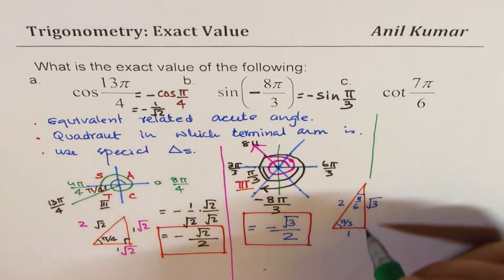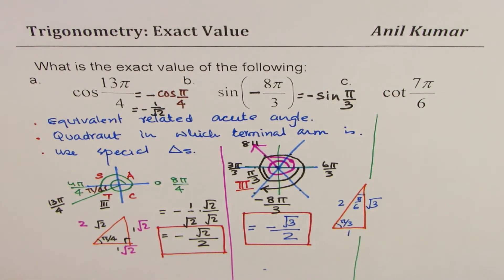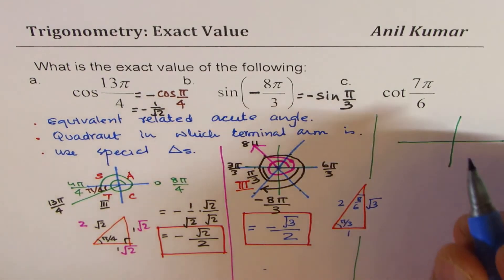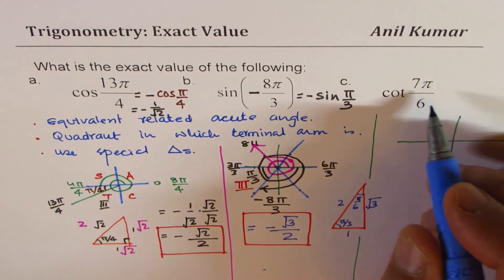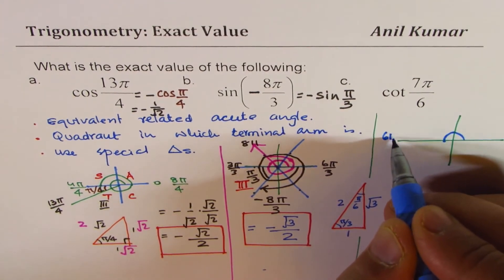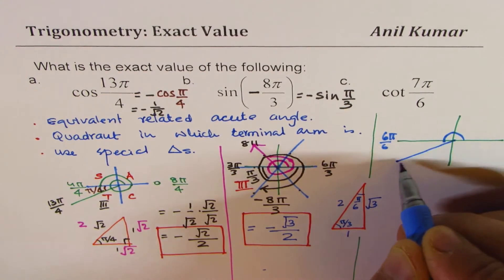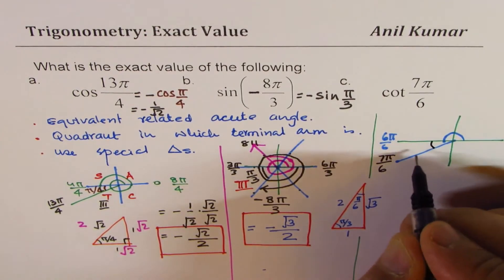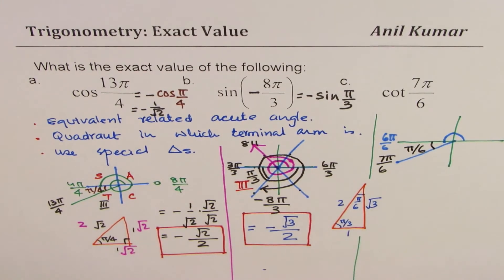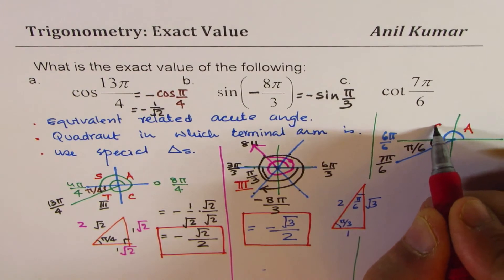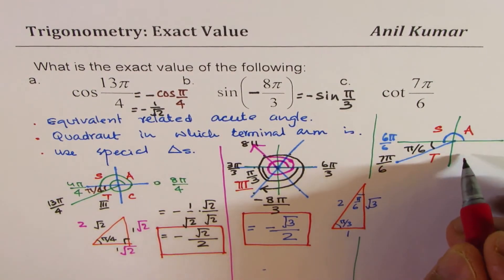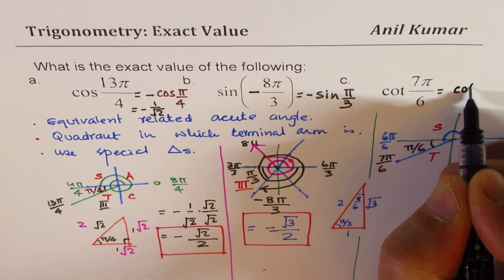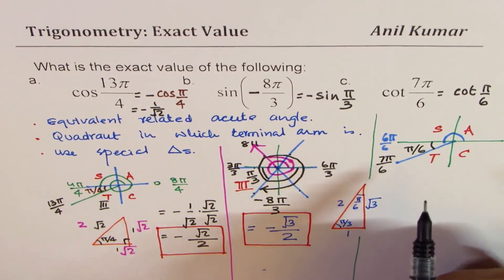The third example is cot(7π/6). Dividing the circle into sixths: 6π/6 = π, and one more step gives us 7π/6, landing in Quadrant 3. In Quadrant 3, tan is positive, and since cot = 1/tan, cotangent is also positive. The related acute angle is π/6, so this equals cot(π/6).